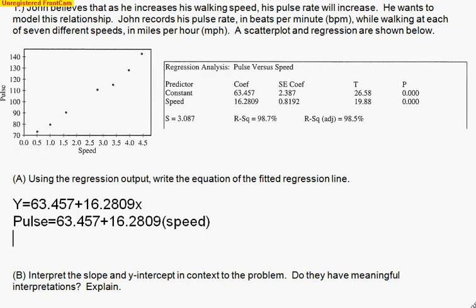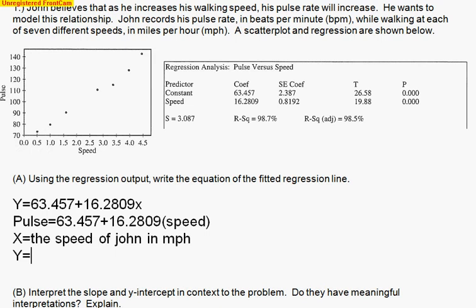On a test you may often see people say, define the variables. Remember, the variables are x and y. The slope and y-intercept are now these specific numbers, 63 and 16. So if I say to define the variables, actually take a second to tell me x equals the speed of John in miles per hour, y-hat equals - again, imagine the y-hat - the predicted pulse rate in beats per minute. So actually take the time to define them with their units, so please don't forget to do that.